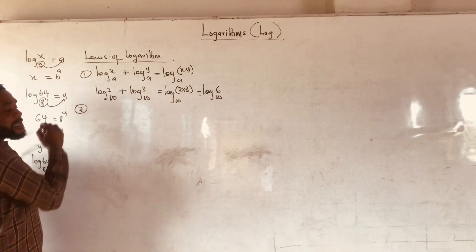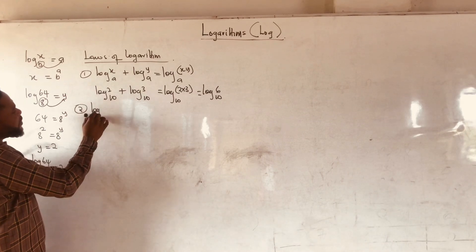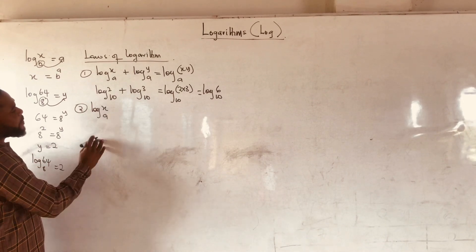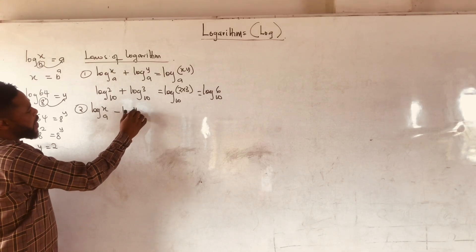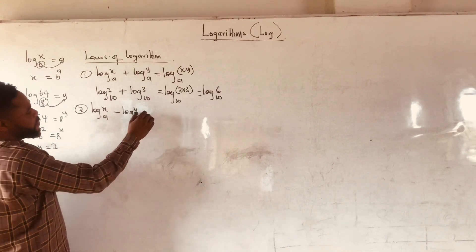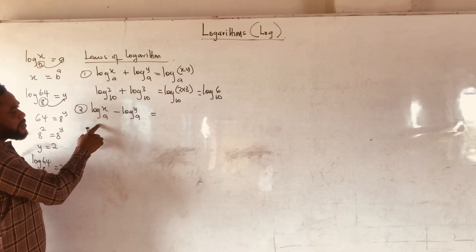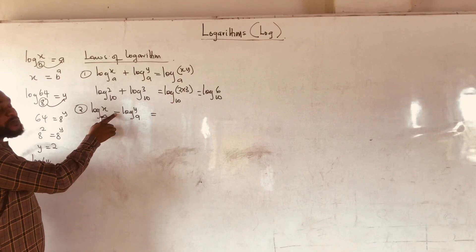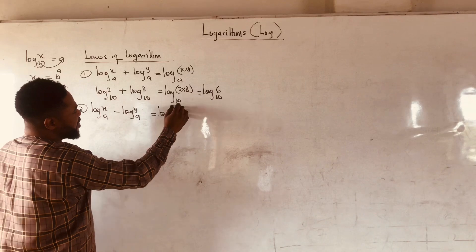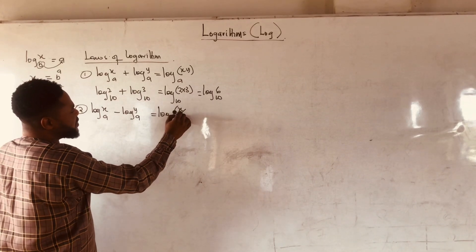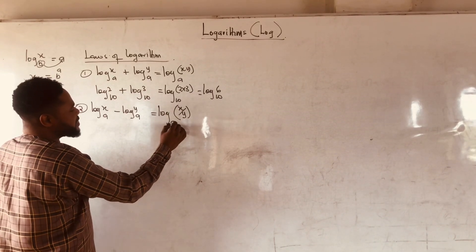Now let us look at the second law. If I have log x base 8 minus log y base 8, log of the same base which are subtracting, you are going to divide the numbers. So I have log of x divided by y, base 8.